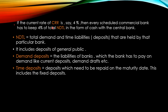If the current rate of CRR is 4%, then every scheduled commercial bank has to keep 4% of total NDTL in the form of cash with the central bank. The question arises: what is NDTL? It is the Net Total Demand and Time Liabilities — meaning the deposits that are held by that particular bank. Every commercial bank can have a different amount of total demand and time liabilities, and 4% of that amount will be the CRR deposited with the central bank.